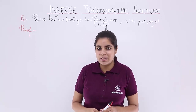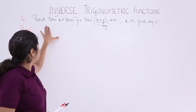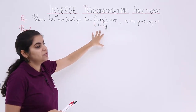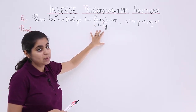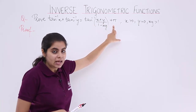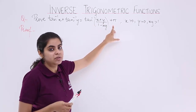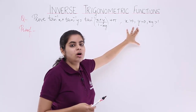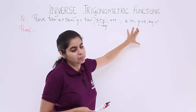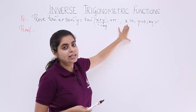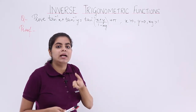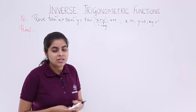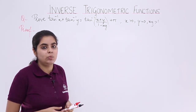Let's read the question together. The question says: prove that tan inverse x plus tan inverse y equals tan inverse of (x+y)/(1−xy) plus π. The conditions given are: x is greater than 0, y is greater than 0, and their product xy is greater than 1.